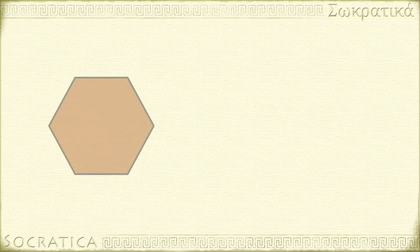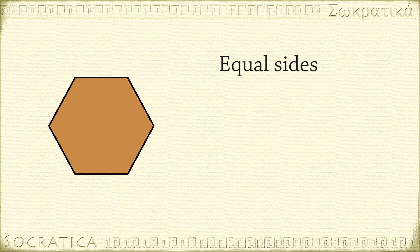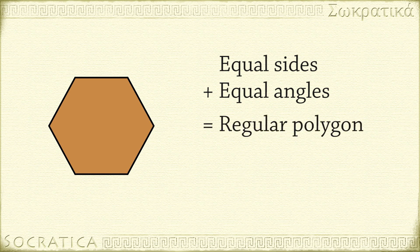A polygon where all the sides are equal and all the angles are equal is called a regular polygon.